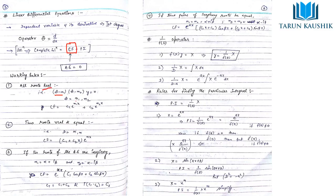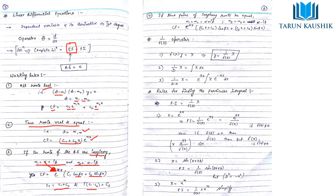If all roots of the auxiliary equation are real — for example m₁ and m₂ — then CF = c₁e^(m₁x) + c₂e^(m₂x). If two roots are real and equal, CF = (c₁ + c₂x)e^(mx). If two roots are imaginary — m₁ = α + iβ and m₂ = α − iβ — then CF = e^(αx)[c₁cos(βx) + c₂sin(βx)], where c₁ and c₂ are redefined constants.